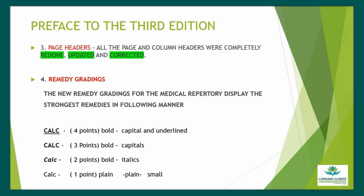The new remedy gradings for the medical repertory display the strongest remedies in the following manner: Grade 4 — Bold, Capital, Underline (e.g., Calcarea); Grade 3 — Bold, Capital; Grade 2 — Bold, Italics; Grade 1 — Plain, small.